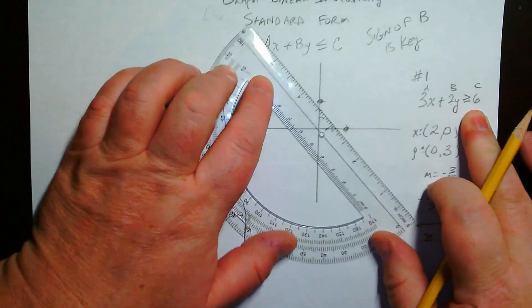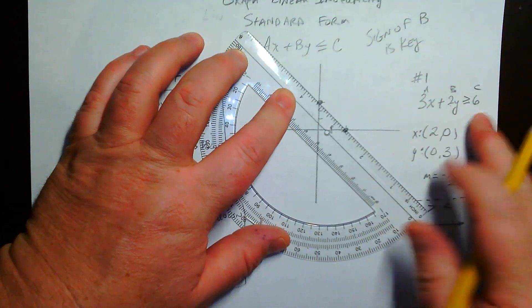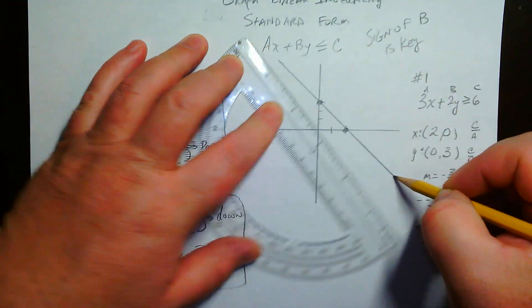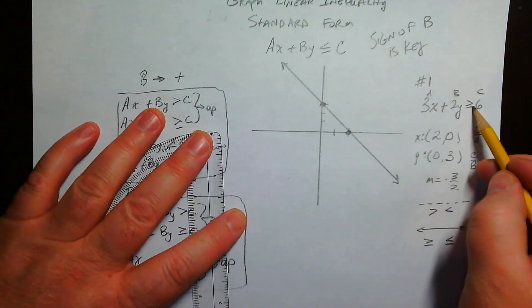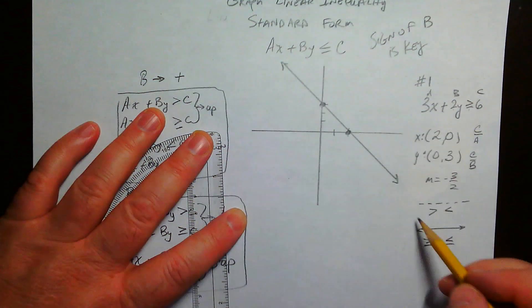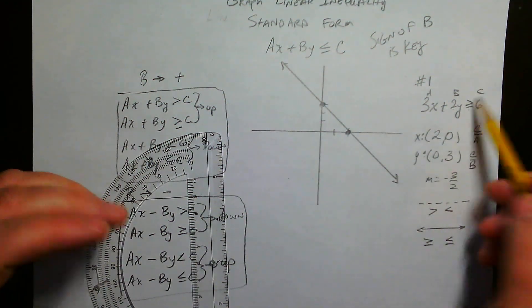Well, here we have an or equal to, so it's a solid line. So we've plotted our points, figured out what kind of line it's going to be. It's not random. We look at that. It's got the little bar underneath. Solid line. If it doesn't, it's a dotted line.